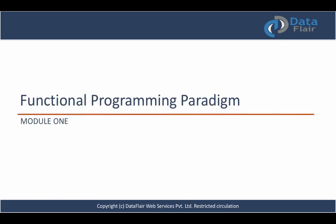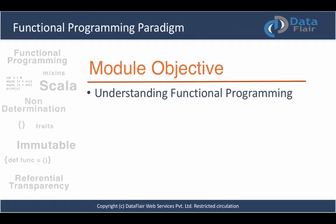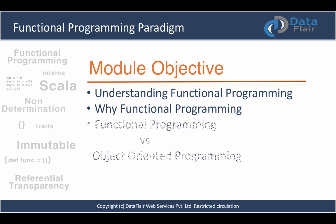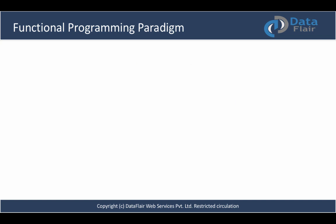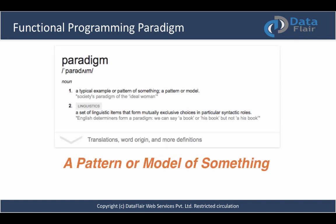Let's start with our first module: functional programming. We will focus on three major topics — understanding functional programming, why it's so important and able to make a presence in modern software architecture, and the differences between functional and object-oriented programming. We'll start by discussing what a paradigm is. A simple definition states that a paradigm is a pattern of something, and when we say programming paradigm we mean a pattern of writing programs. The concept of functional programming is old — older than you might think.